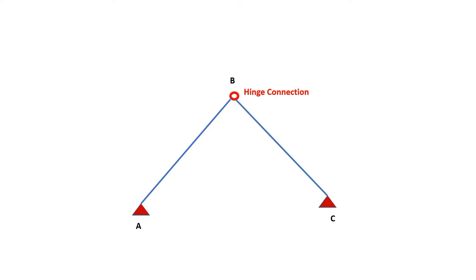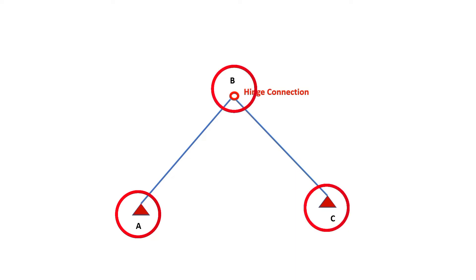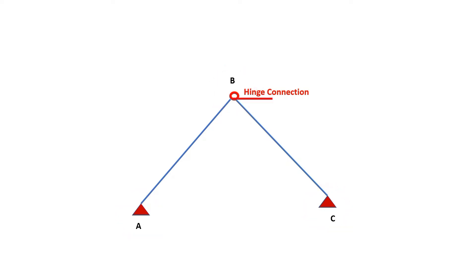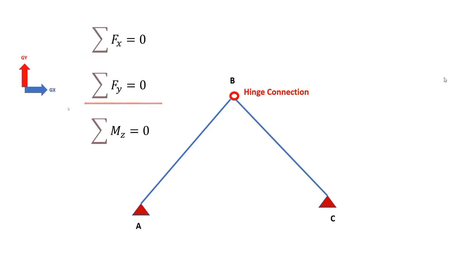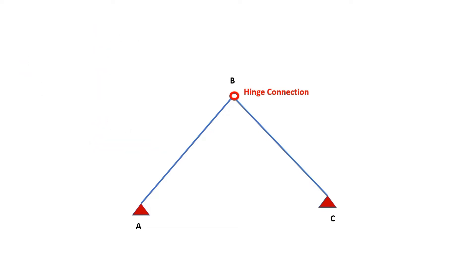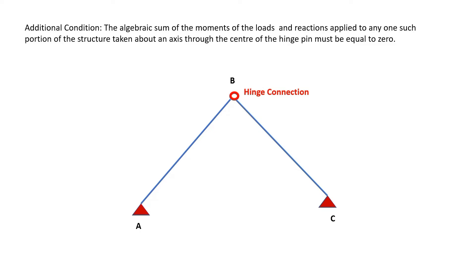To lend stability to this structure, we add supports. In this particular structure, we have three nodes or three joints. Joint A has a pin support, joint C has a pin support, and joint B connects both different parts using a hinge connection. A hinge connection allows rotation at that particular point between different rigid parts. To solve for the reactions, we can use the three equations of equilibrium — summation of Fx = 0, summation of Fy = 0, and summation of Mz = 0. But in this case, we have an additional condition for a hinge connection: the algebraic sum of the moments of the loads and reactions applied to any one portion of the structure, taken about an axis through the center of the hinge pin, must be equal to zero.